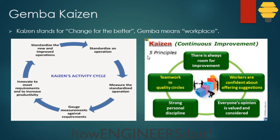There are five principles for Kaizen. The first is: there is always room for improvement. We will always look for improvement — we will never say a process is good just because it's meeting requirements and stop there. It's always either improving or going down, so we must keep improving.